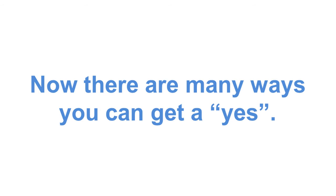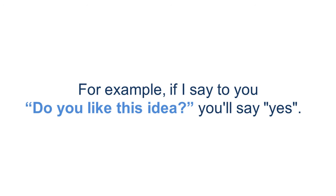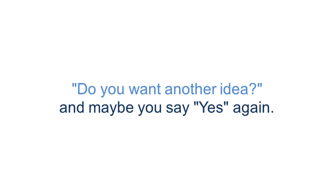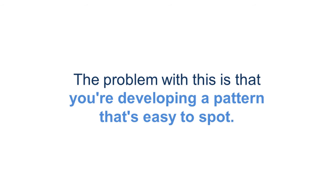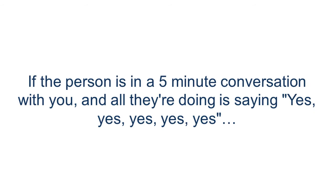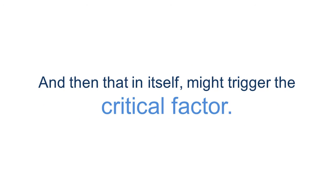There are many ways that you can get a yes. There are some clumsy or obvious ways — for example, if I say to you, 'Do you like this idea?' you'll say yes. 'Do you want another idea?' Well, maybe you say yes again. You see, I'm asking your conscious mind to actually say yes. The problem with this is that you're developing a pattern that's easy to spot. If a person is in a five-minute conversation with you and all they're doing is saying yes, yes, yes, chances are they'll start noticing why they keep saying yes, and that itself might trigger the critical factor.